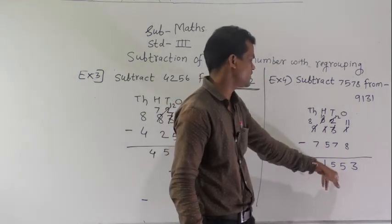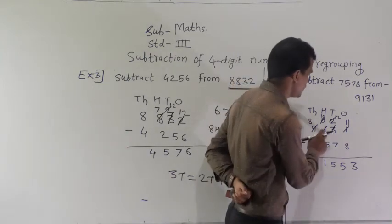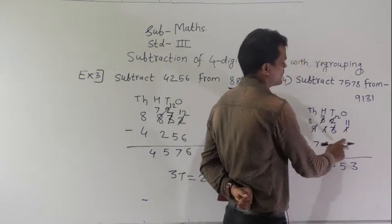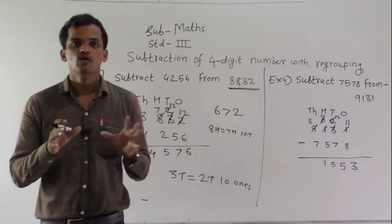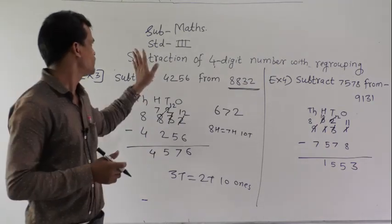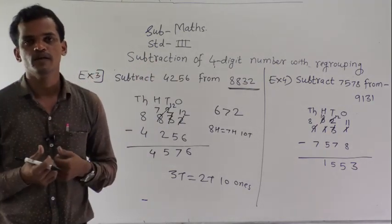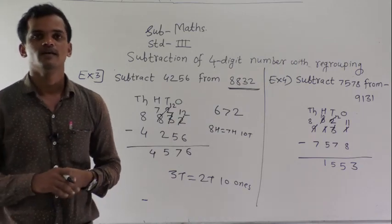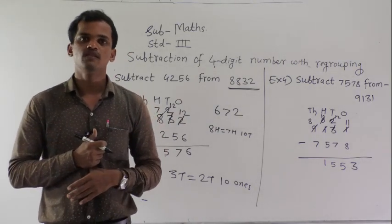1,553 is the difference between 9,131 and 7,578. Like this, you have to solve the examples of subtraction of 4-digit numbers with regrouping — another name for regrouping is subtraction of 4-digit numbers with borrowing.